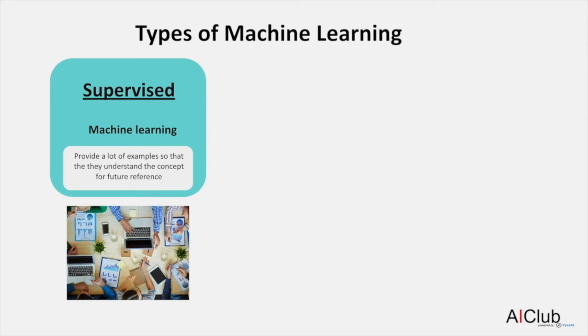And then when a new image comes in, it can make a prediction of whether there is a cat or a dog. We are going to focus on this type of machine learning in our session.